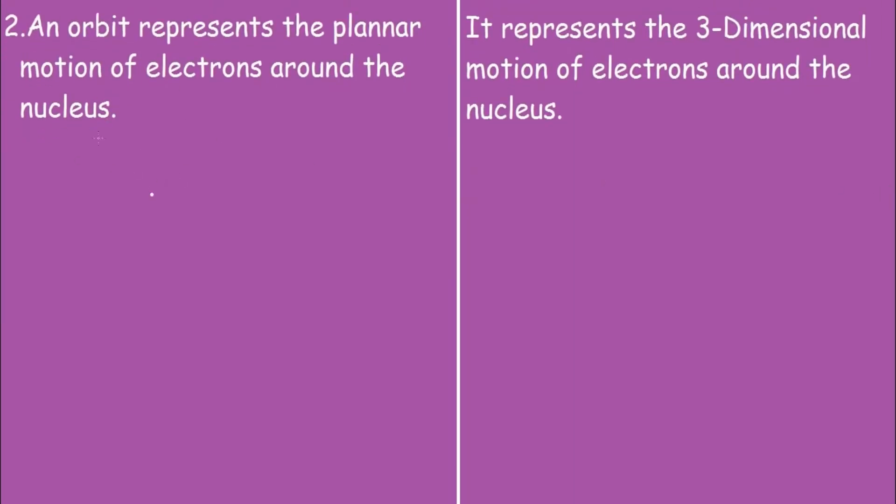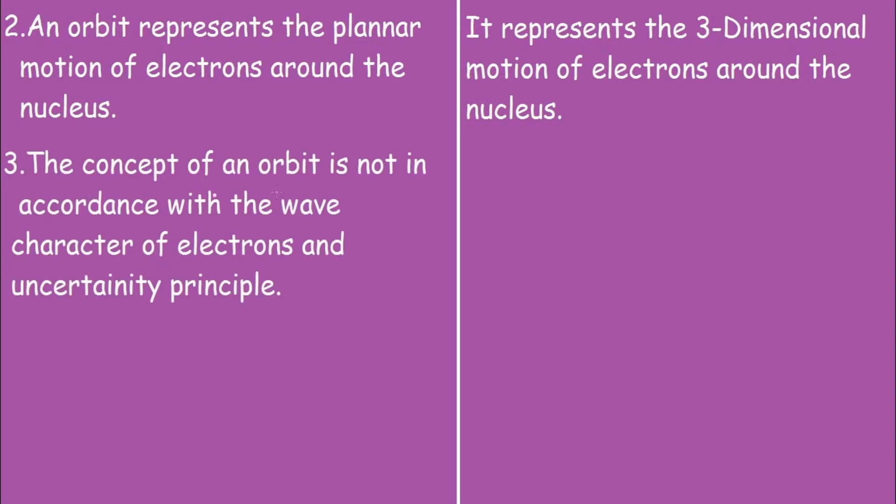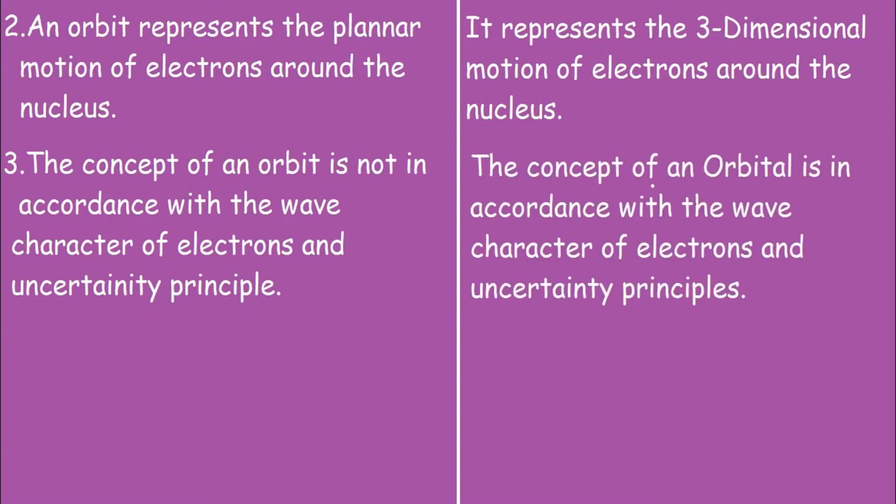Now the third point under orbit is, the concept of an orbit is not in accordance with the wave character of electrons and the uncertainty principle. And for orbital, the concept of an orbital is in accordance with the wave character of electrons and the uncertainty principle.